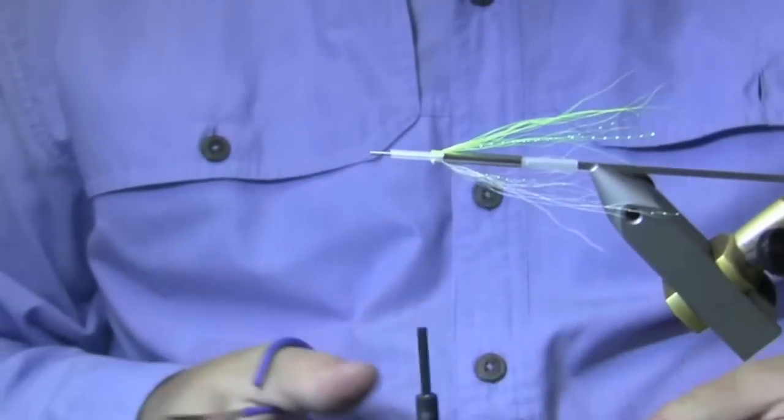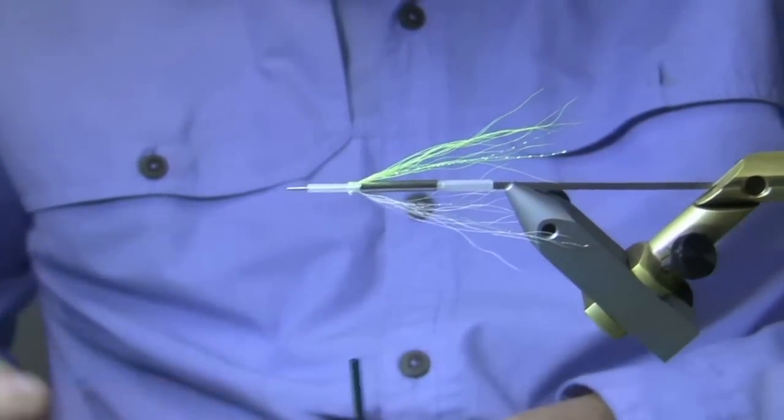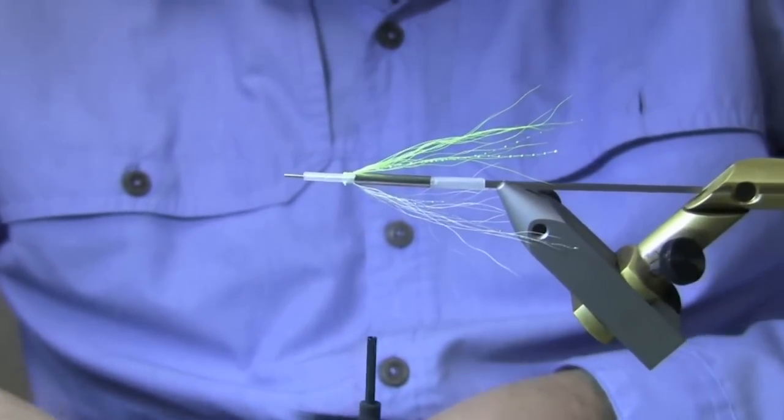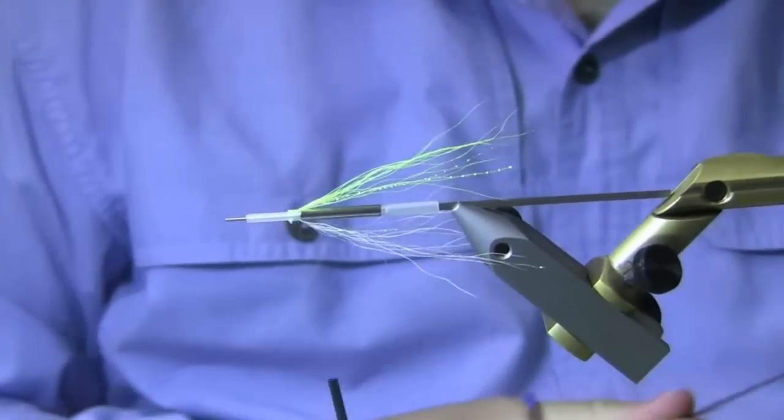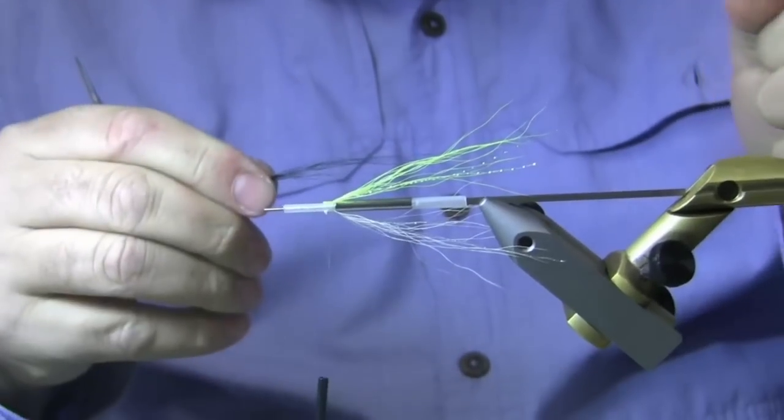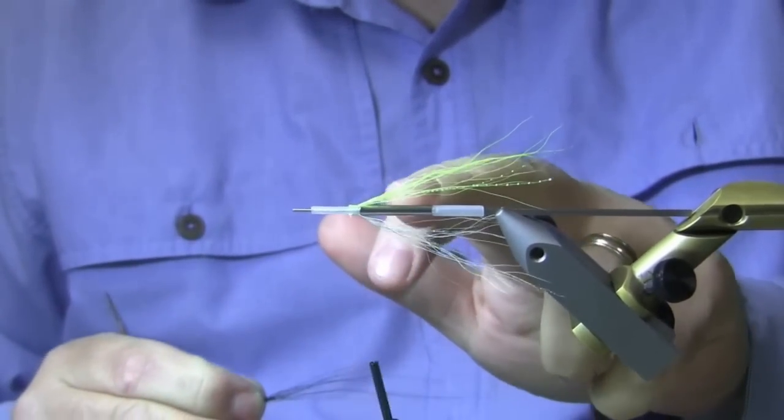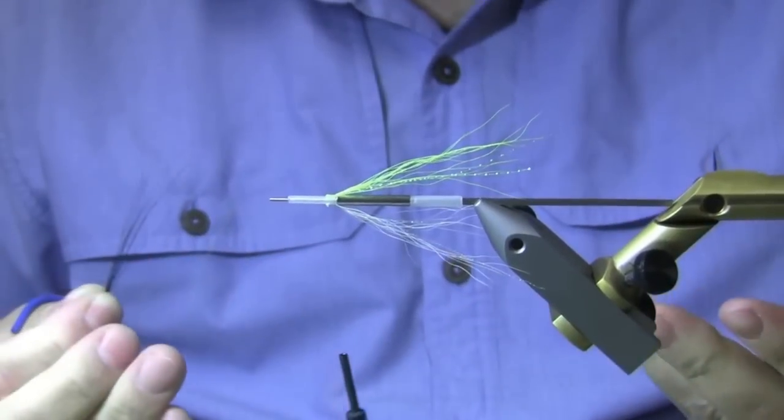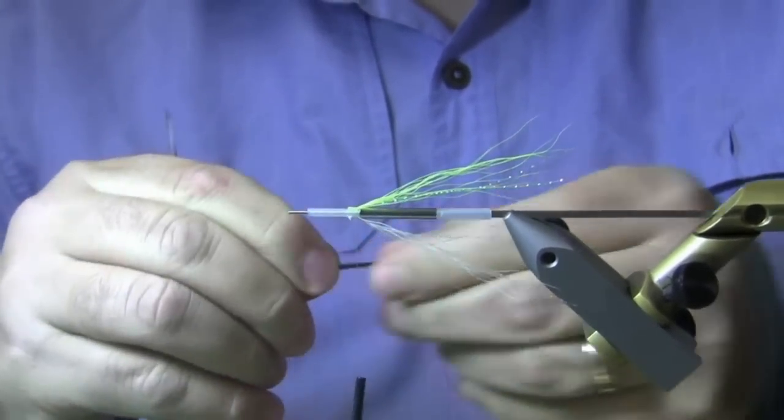Now this fly is kind of an adaption from what they call a needle fly in the UK. And it was really originally tied on a needle. Very sparse. They do them now on stainless tubes and such. But the Protube works very well for this. And you can, on the body itself, you can use the Flexi Tube for weight or not and just use a flat diamond braid silver for that.